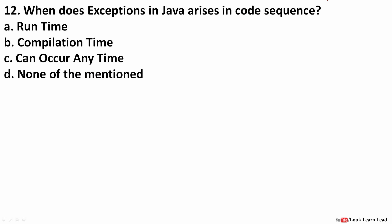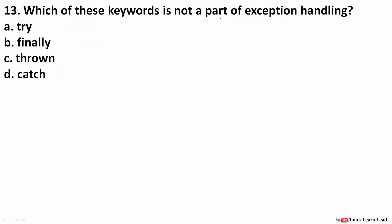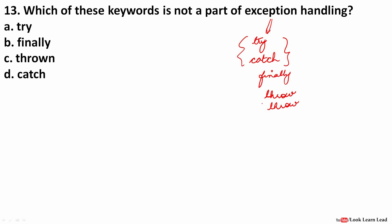When does an exception arise in Java code? Exceptions always arise at runtime. The keywords used for exception handling are: try, catch — together called the try-catch block — finally, throw, and throws. Try-catch and finally provide automatic exception handling, while throw and throws are used for manual exception handling. The keyword 'thrown' does not exist and is not part of exception handling.